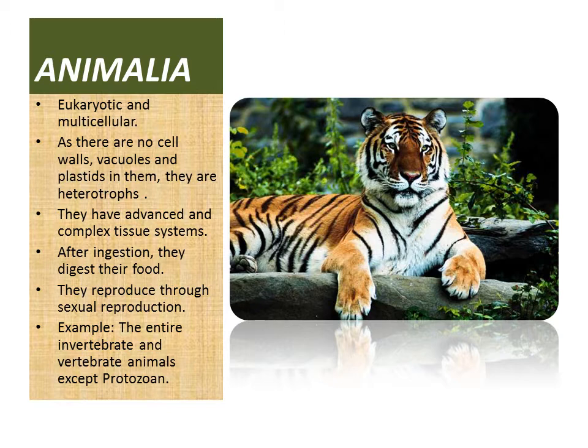Animals have advanced and complex tissue systems. After ingestion they digest their food. They reproduce through sexual reproduction. One special feature is their four-chambered heart. Examples include the entire invertebrate and vertebrate animals, except protozoans.